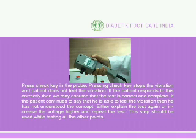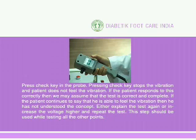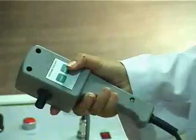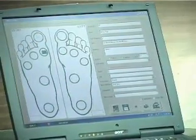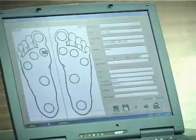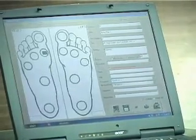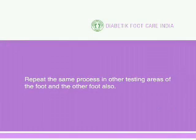If the patient continues to say they feel the vibration after the check key is pressed, they have not understood the concept. This step should be used while testing all other points. When the vibration value is reconfirmed, record the displayed reading to the PC by pressing the record button on the VPT probe. Reduce the voltage and repeat the same process in other testing areas of the foot and the other foot as well.